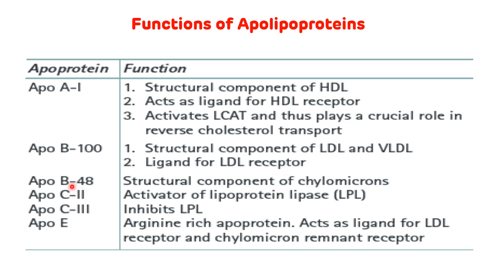ApoB48 is the structural component of chylomicrons. ApoC2 plays a very important role in the activation of lipoprotein lipase, while ApoC3 inhibits lipoprotein lipase. ApoE is an arginine-rich apoprotein that acts as a ligand for the LDL receptor as well as for the chylomicron remnant receptor. The ApoE gene exhibits polymorphism, resulting in the expression of three common isoforms: ApoE2, ApoE3, and ApoE4.